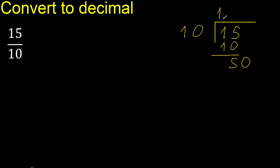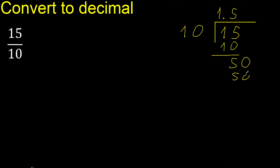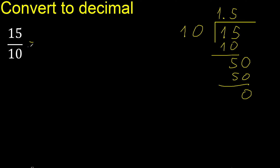Here, after the point: 10 multiplied by which number is nearest to 50 but not greater. Multiplied by 5 is exact: 50. Subtract: the result is 0. Therefore, finish.